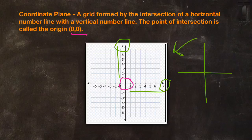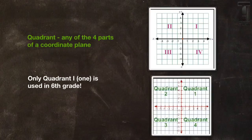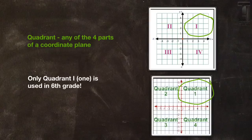The origin is at coordinate (0,0). I like to think of it as the owl lives right here at the origin. A coordinate plane is split up into four quadrants, but in sixth grade you only have to worry about quadrant one. Sometimes the quadrants will be indicated with Roman numerals, but again you're only concerned about the first one in sixth grade, so that's what we're going to work with here in the video.